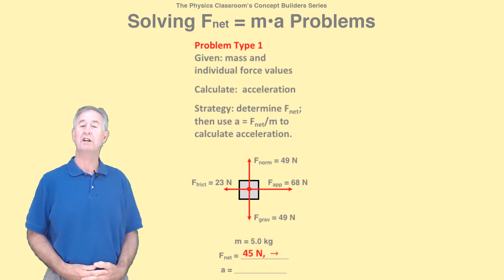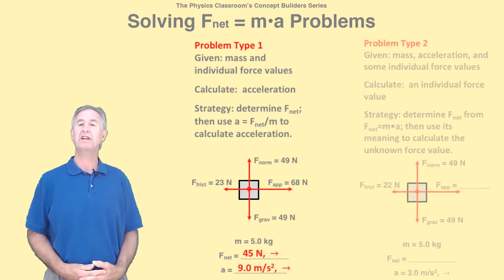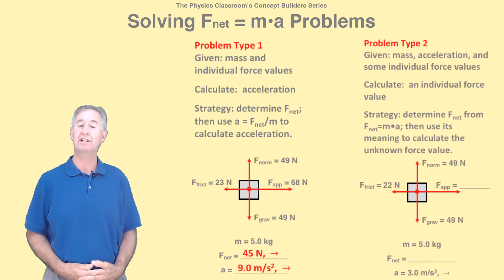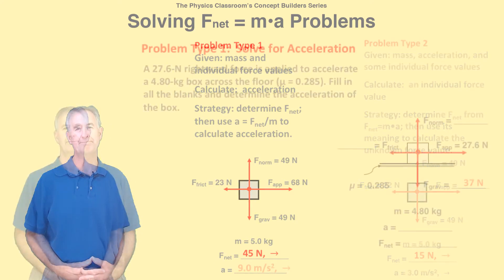In the second type, you're given the mass and acceleration and some individual force values. You must calculate f net and then use f net to determine the unknown value of an individual force. I will do an example of each type of problem.